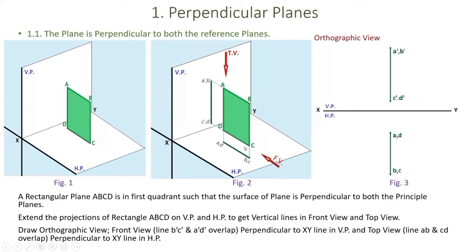Points D and C also come together at a single projected point, and connecting these two points we get a line — this is the front view in the vertical plane, perpendicular to the horizontal plane. When we look from the top view, points A and D project onto a single point, and points B and C project onto a single point; connecting these two gives a straight line that is the top view in the horizontal plane.